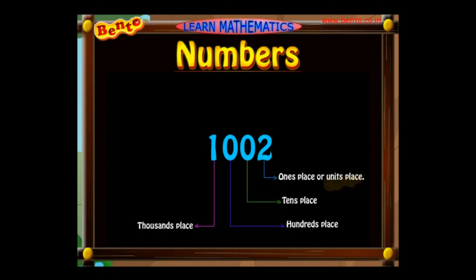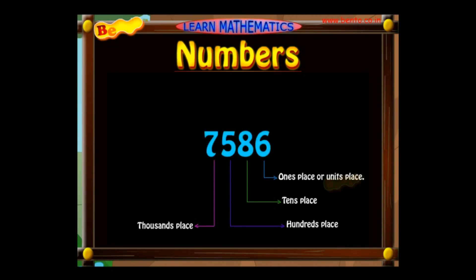The number seven thousand five hundred and eighty-six has the value 6 in its units place, 8 in its tens place, 5 in its hundreds place, and 7 in its thousands place. It tells us the number has seven thousands, five hundreds, eight tens, and six ones.